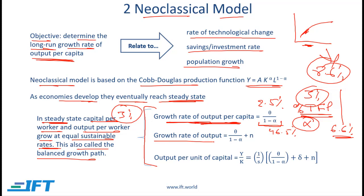The next formula is the growth rate of overall output — the growth in Y, not the growth in per capita output. The growth rate of output is theta over 1 minus alpha, which is the growth rate of output per capita, plus N, where N is the growth rate of the labor force. This should be familiar: the growth rate of output equals the growth in labor productivity plus the growth rate of the labor force.